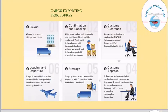Now let us look at how cargo is usually exported. The first step for exporting cargo is the pickup. The second step is confirmation and labeling. After being picked up, the quantity and condition of the freight is confirmed. The freight is then labeled with those details along with an airway bill and is then transported to a bonded warehouse.